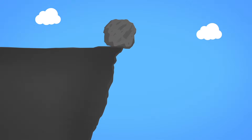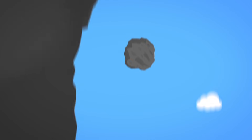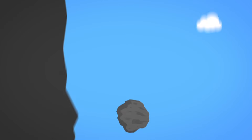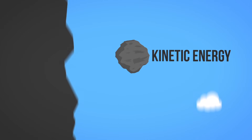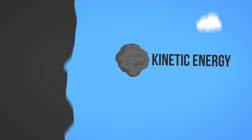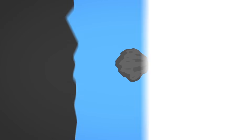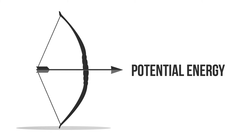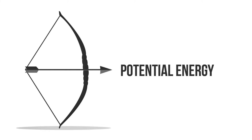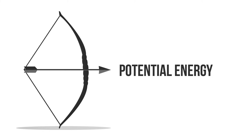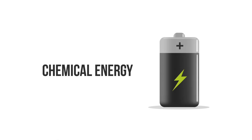Energy is found in nature in many forms, including Kinetic energy, which is energy associated with mass and motion. Potential energy, which is energy associated with position in a force field, such as a gravitational, electric, or magnetic field. Chemical energy, which is energy stored in certain materials that can be released by chemical reactions.